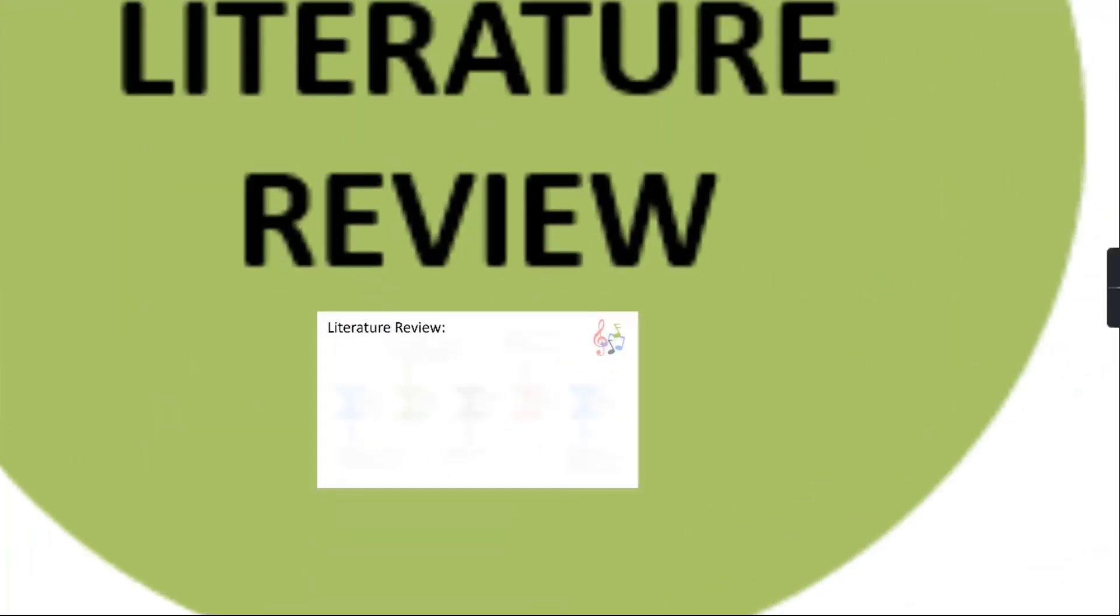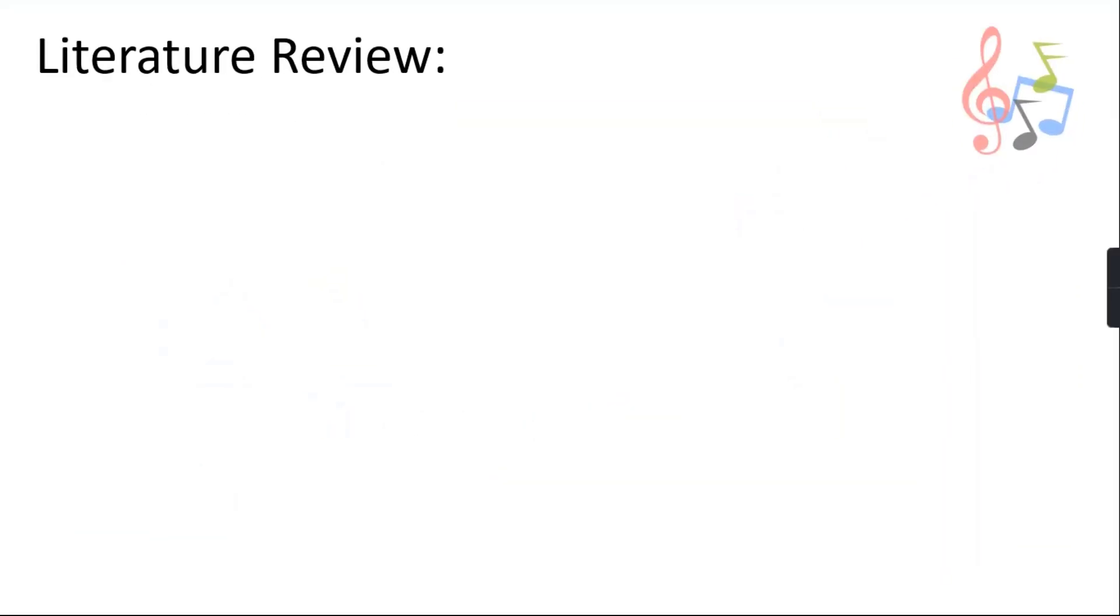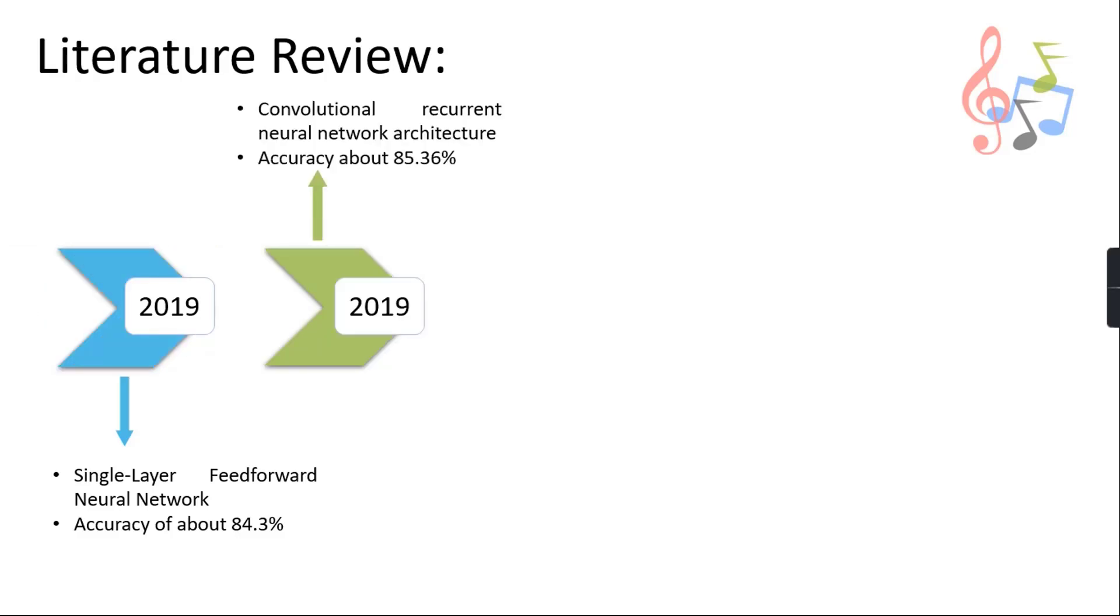Moving on to the literature review. Music genre classification is an area which has attracted the interest of many researchers. This section will provide details about some research work already done in this field. In 2019, accuracy about 84.3% has been achieved using single layer feed forward neural network. In the similar year 2019, accuracy about 85.36% has been achieved using convolutional recurrent neural network architecture.